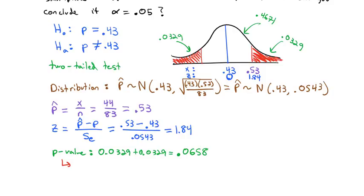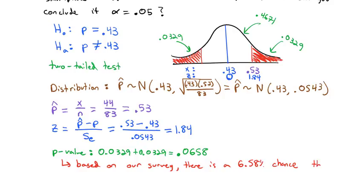That p-value is the probability our null hypothesis is true based on our survey. In other words, based on our survey, there is a 6.58% chance the proportion of iPhone users is actually 43%, what the null hypothesis claims.